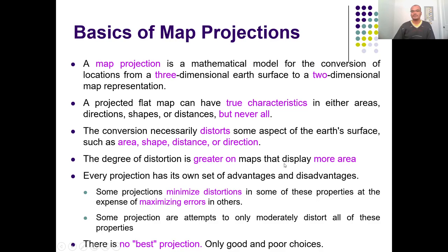The amount of distortion always depends on the area you cover. If you are covering more and more area, you can expect more and more distortions. If you are projecting only a smaller area — say part of a city, part of a country, or part of a region — then the amount of distortion will be less. If you are projecting the entire globe in a single flat surface, the amount of distortions will be more. If you are projecting only a smaller pocket of the Earth's surface, the distortions will be less.